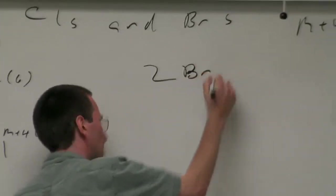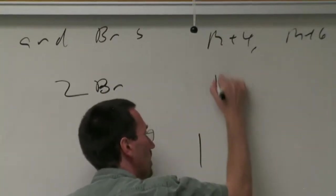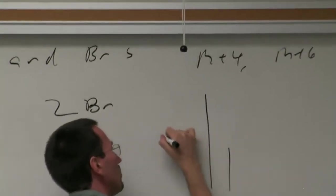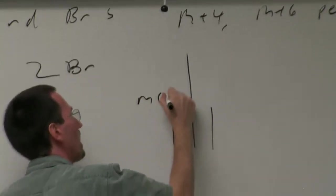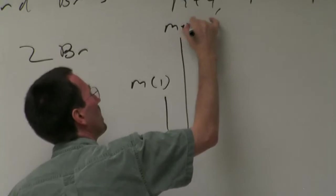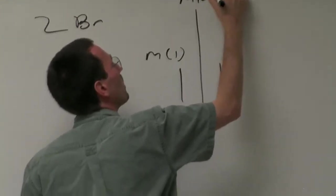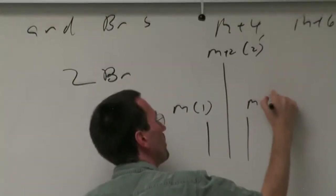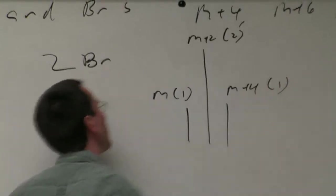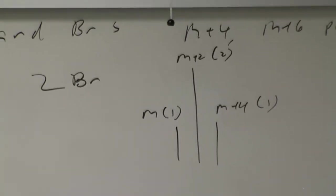If you have two bromines, then you'll see a pattern that goes in about a 1 to 2 to 1 ratio, your M, your M plus 2, and your M plus 4.